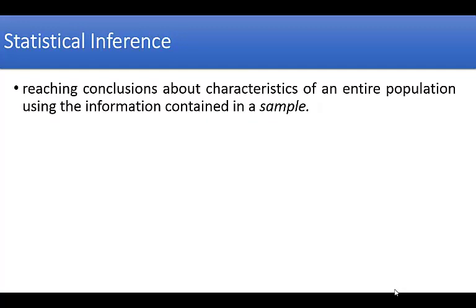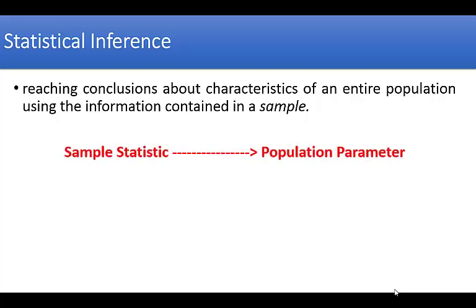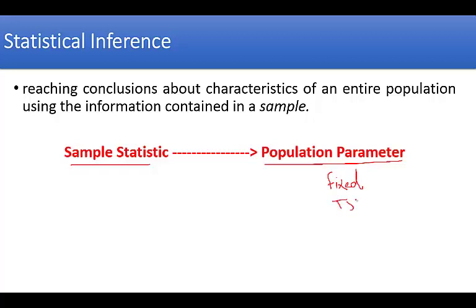Statistical inference is about reaching conclusions about characteristics of an entire population using information contained in a sample. Sample statistics are numbers computed from a sample, which is part of the population. Population parameters are fixed, true, but unknown quantities, and we need to draw conclusions about these fixed true unknown numbers based on sample statistics.